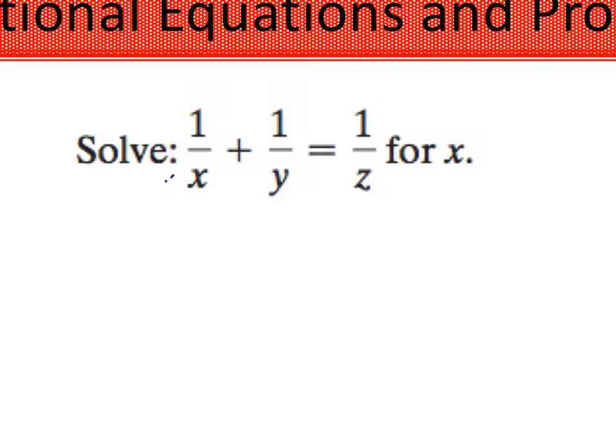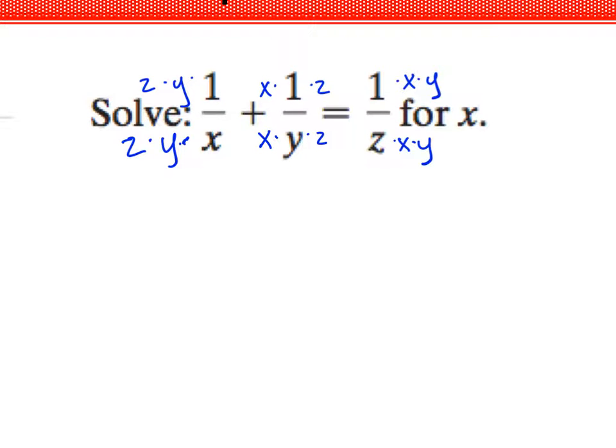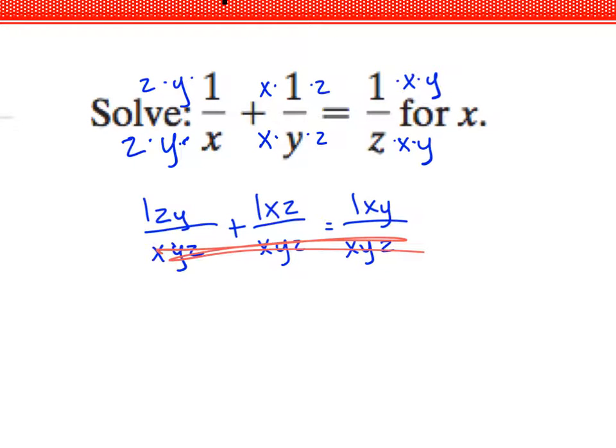So our common denominator is going to be all three of them together. The first fraction here is missing y and missing z, so I'm going to have to multiply those in. The middle fraction is missing x and z. And the last fraction is missing x and y. And so what I get is zy over xyz plus 1xz over xyz equals 1xy over xyz.